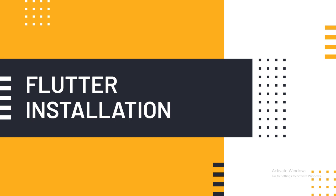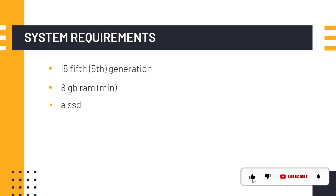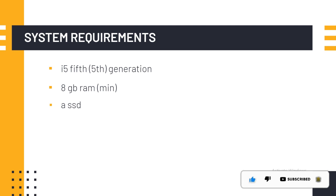In order to install Flutter, you need a system with at least an i5 fifth-generation processor, a minimum of 8GB RAM, and an SSD. If your system doesn't meet these requirements, you will fail to run the application or you will see errors, or the application will run slowly.